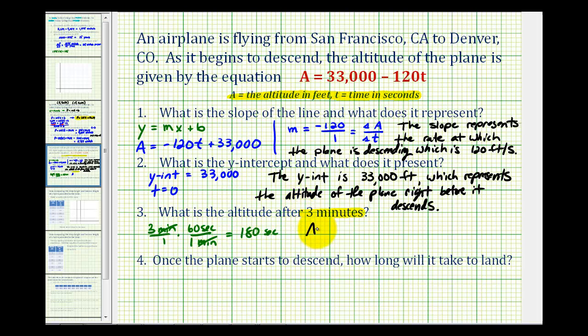So we'll have the altitude is going to be equal to, we'll go ahead and use the original equation, 33,000 minus 120 times 180. So we'll have 33,000 minus this product, which is 21,600. And this difference is 11,400, and this would be in feet. So after three minutes, the altitude of the plane is 11,400 feet.